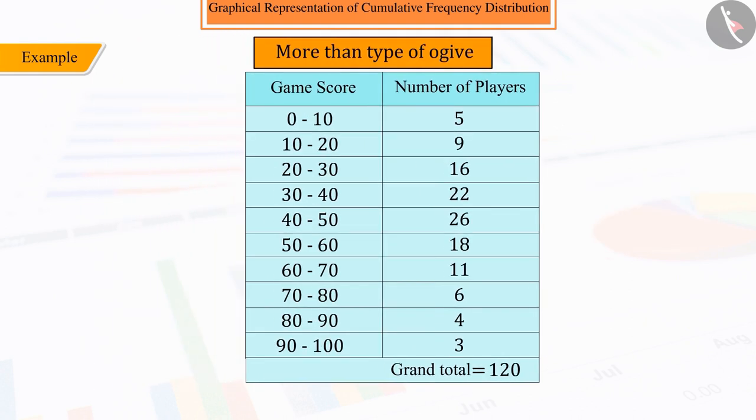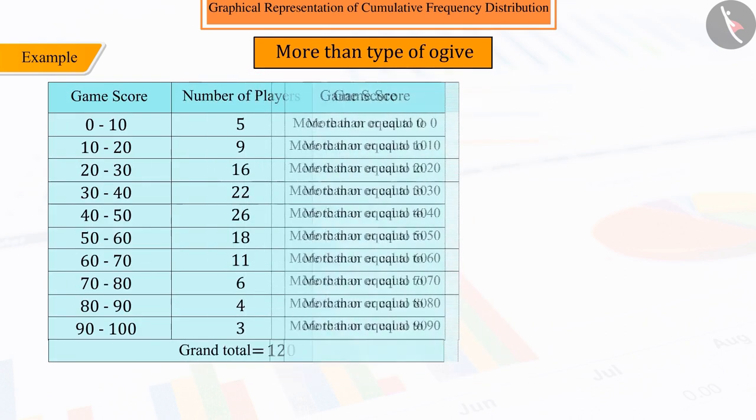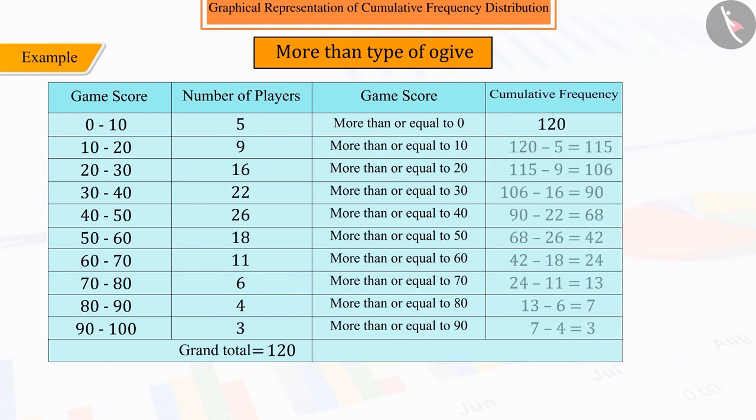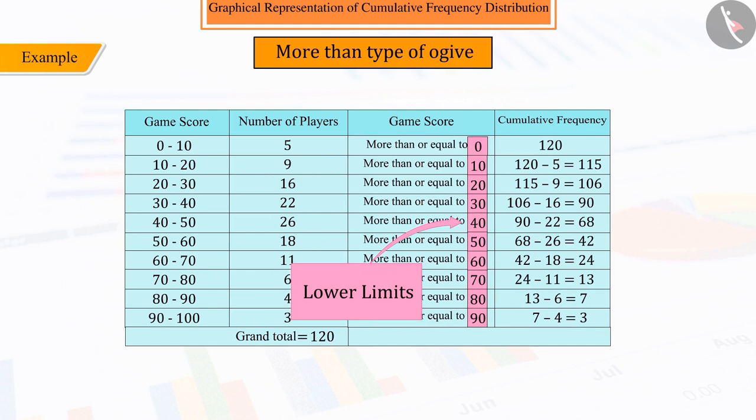For this type of Ogive, a frequency distribution will have to be constructed with the help of the given data, which is called more than type of cumulative frequency distribution, where 0 to 90 are the lower limits of the corresponding class intervals.